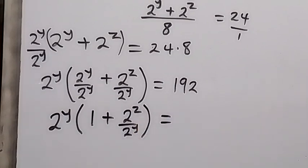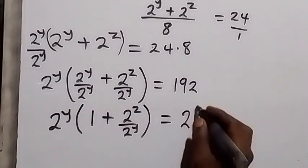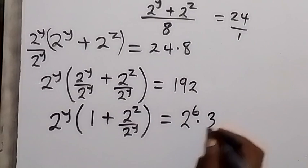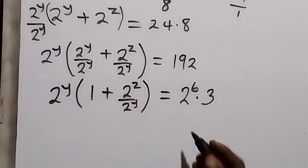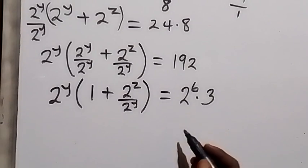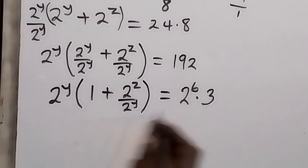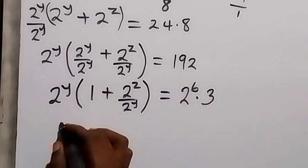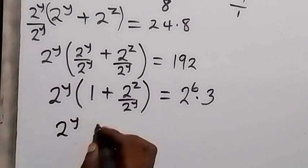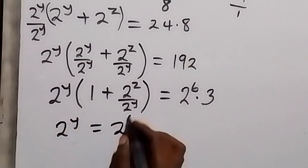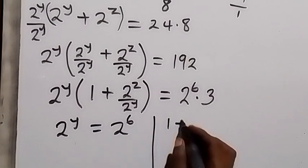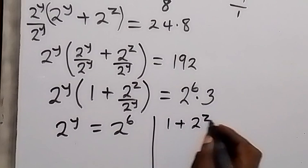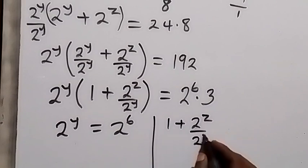The prime factorization of 192 gives us 2 raised to power 6 times 3. We divide through and put it in index form. Comparing, we match 2 raised to power y with 2 raised to power 6, and also compare the bracket (1 plus 2^z over 2^y) with 3.